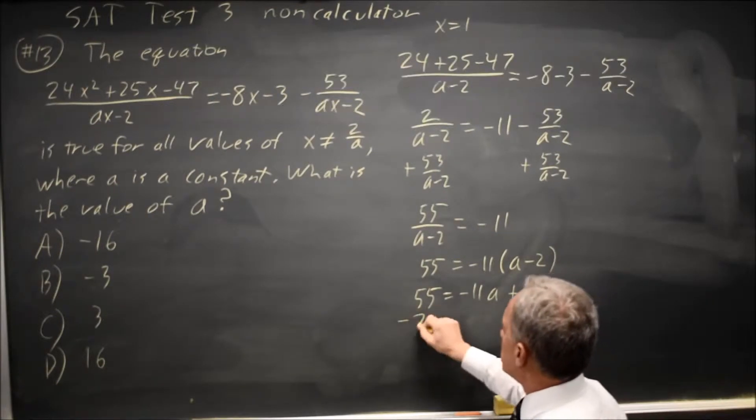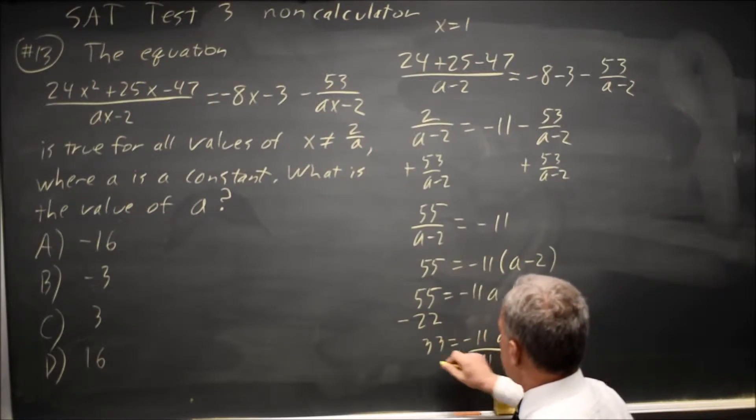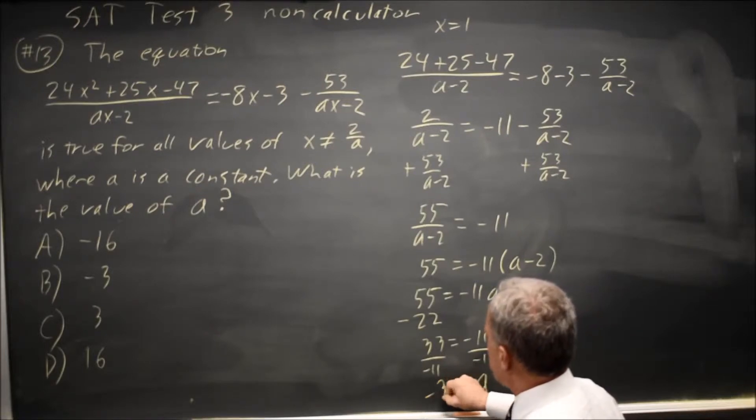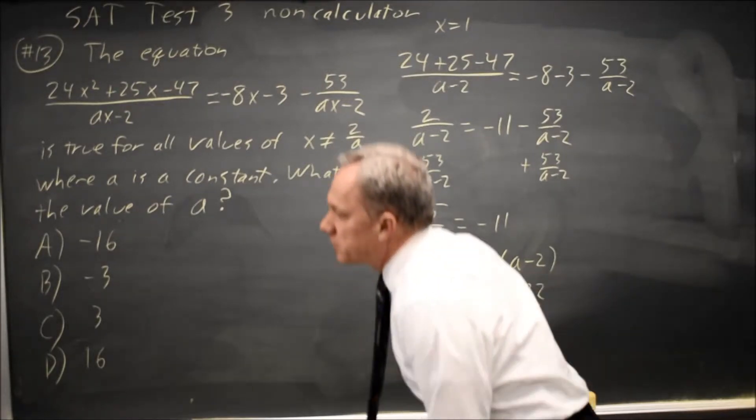subtract 22 from both sides, 33 equals negative 11A, divide by negative 11, and I get A equals negative 3, which is choice B.